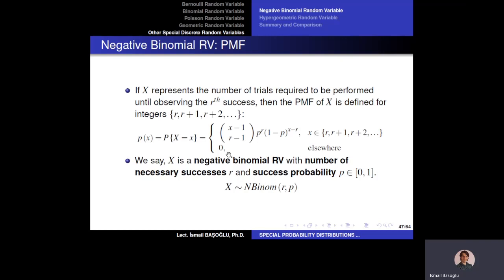The negative binomial random variable has two parameters: r, the number of successes required to stop, and p, the success probability in each experiment. By assigning different r and p values, we get different negative binomial random variables. p must be between 0 and 1, and r can be any positive integer. When r equals 1, the negative binomial random variable is exactly a geometric random variable.